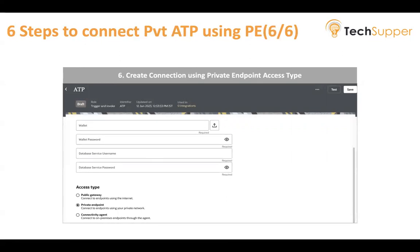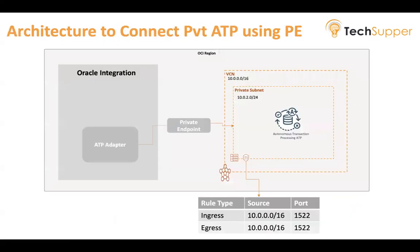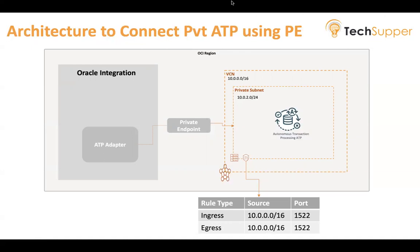Let's see how this architecture looks. You have Oracle Integration with an ATP adapter. In the same OCI region you have a VCN with range 10.0.0.0/16, a private subnet inside it, and your ATP in that private subnet. In the security list of the private subnet, you add two rules — ingress and egress — specifying the VCN source CIDR along with ATP port 1522. When you establish the connection and select the private endpoint feature, the connection happens via the private channel. Now let's get into the demo.